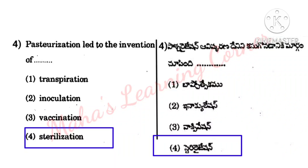In the sterilization process, bacteria are killed. The materials are kept in a sterilization chamber and are heated up to very high temperature for up to 30 minutes. During operations, surgeons use only sterilized instruments and other sterilized materials, which avoids infection.